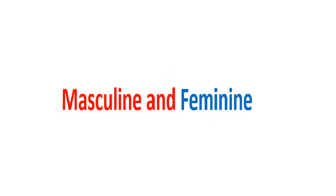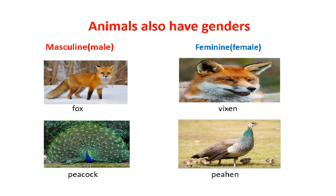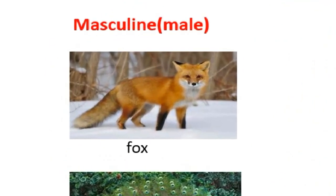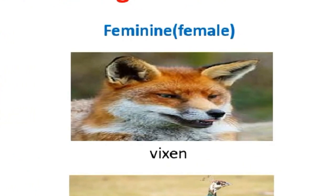I think it is clear so far and you can easily recognize whether the noun or gender we are talking about is male or female. As I told you earlier, animals also have genders. So look at the pictures and read with me. Look at picture one — it is a fox. Fox is a masculine noun.